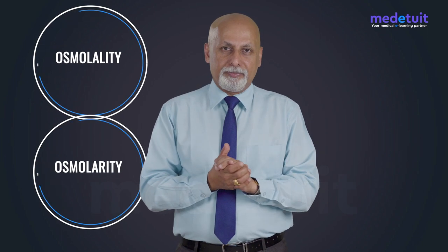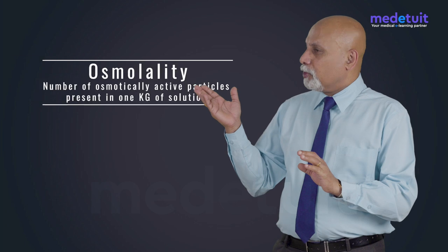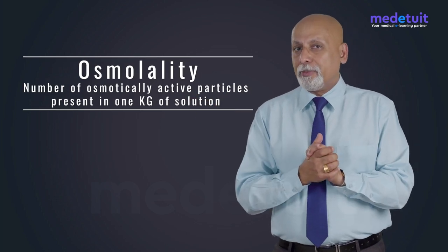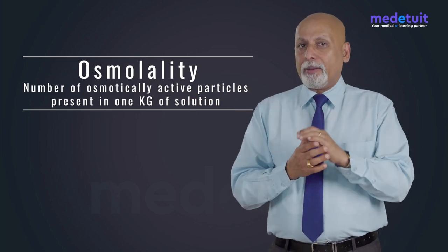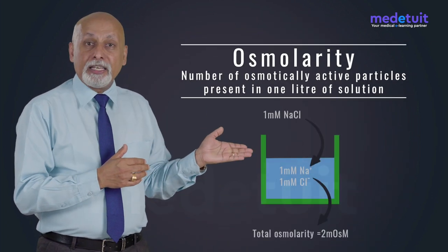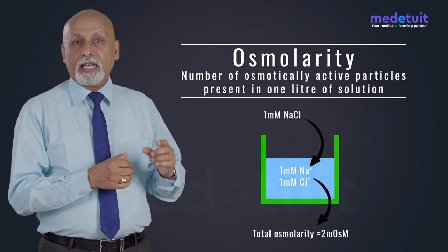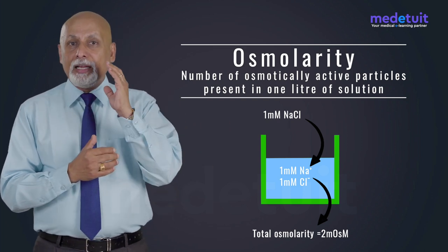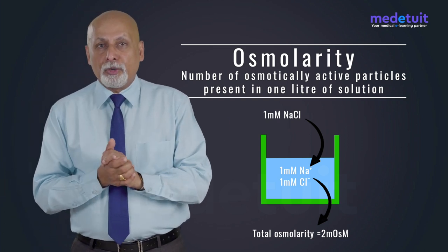Osmotic concentration of solutions is usually expressed in two different terms: osmolality and osmolarity. Osmolality is the number of osmotically active particles in one kilogram of solution, whereas osmolarity is the number of osmotically active particles present in one liter of solution.